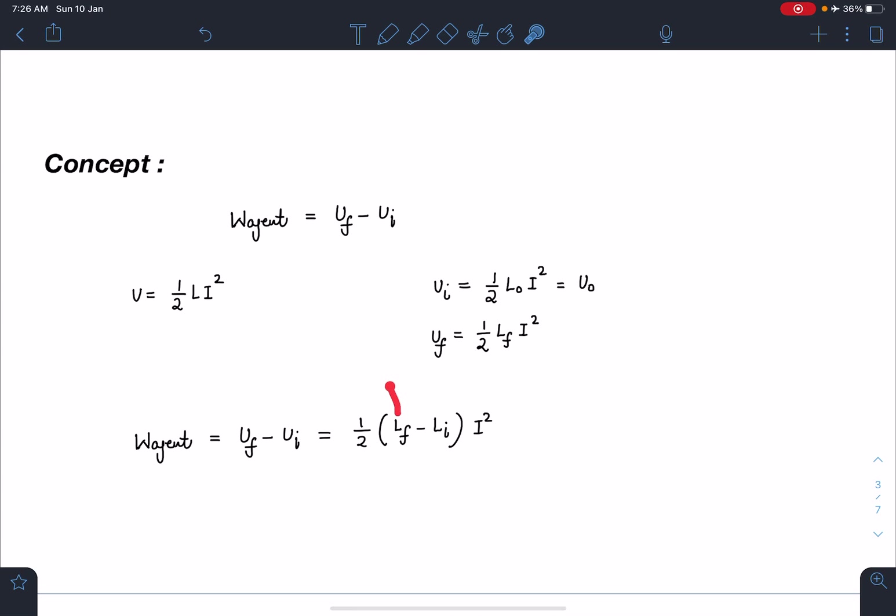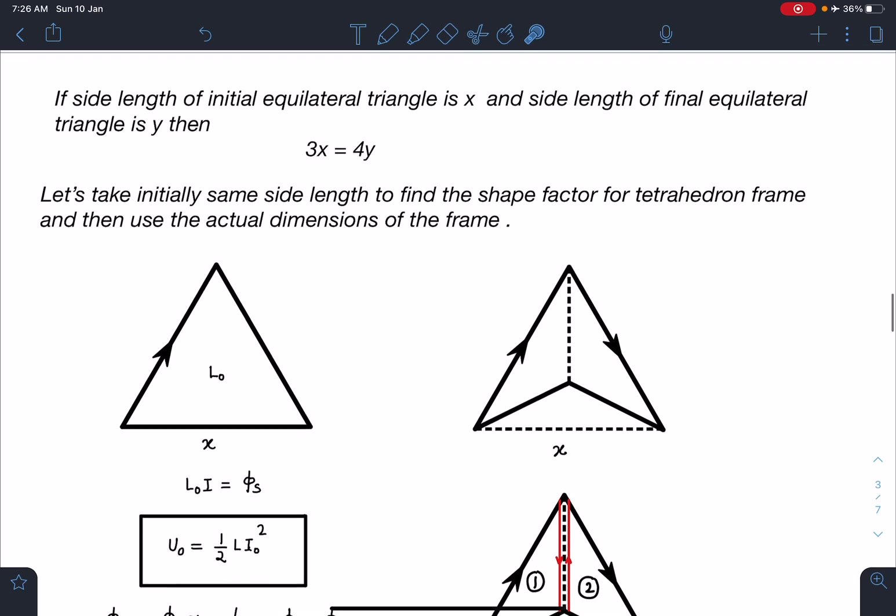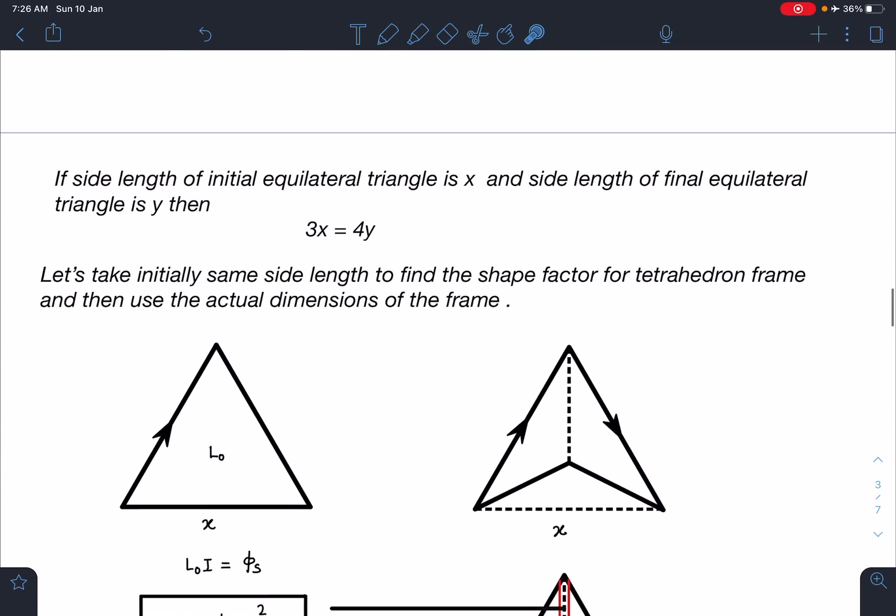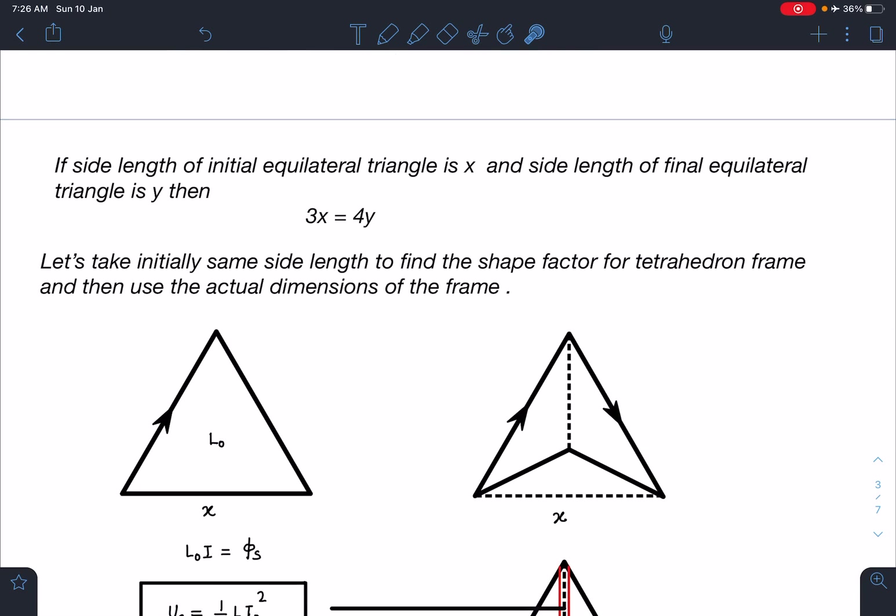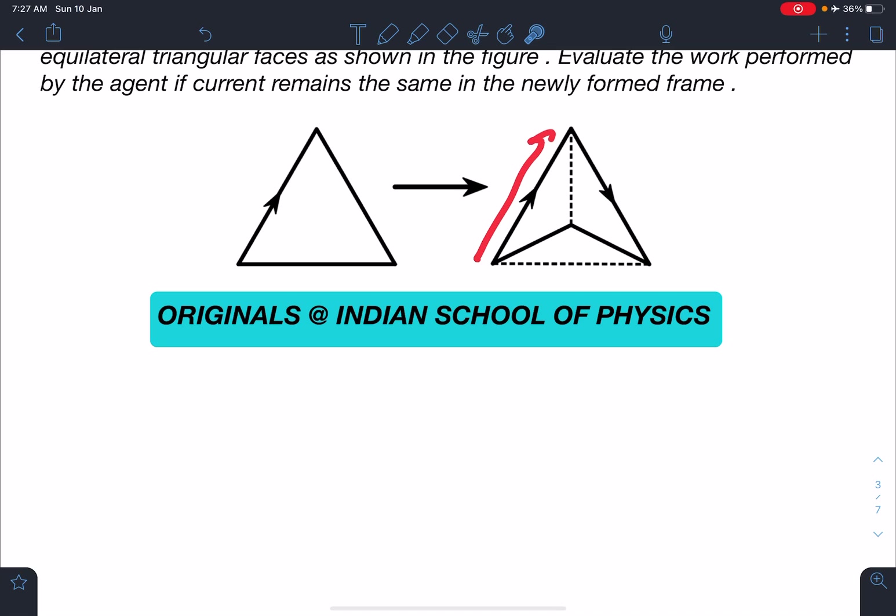The entire thing is how to find this final self inductance or effective inductance of the system. First thing which we are going to notice here is side length of initial equilateral triangle is X and the side length of the final equilateral triangle is Y. Then I can write 3X = 4Y. This is going to be the first equation which I am going to use. You can see 1, 2, 3 and 4. 4Y = 3X.